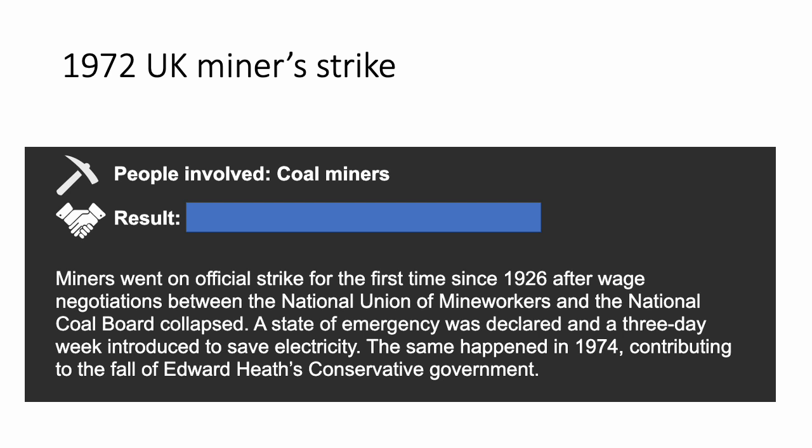In 1972 there was the UK miners strike — the first time since 1926 that miners had gone on official strike. The reason was that wage negotiations between the National Union of Mineworkers and the National Coal Board had collapsed. They were asking for around a 40% pay rise. This collapse in negotiations went on for quite a few years and eventually resulted in a general election. A state of emergency was declared and a three-day week was introduced in order to save electricity, so businesses were required to limit their electricity use to three days in the working week.